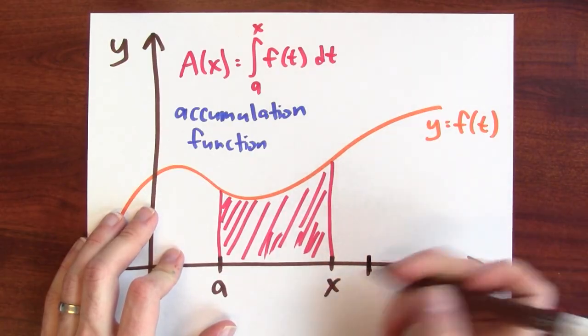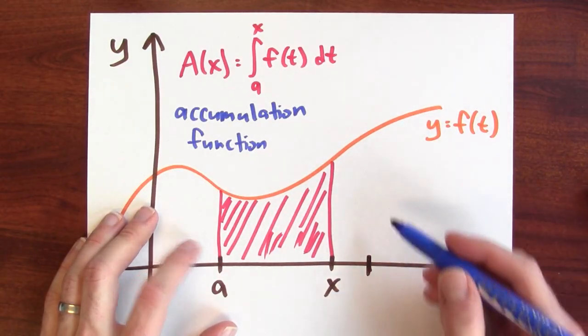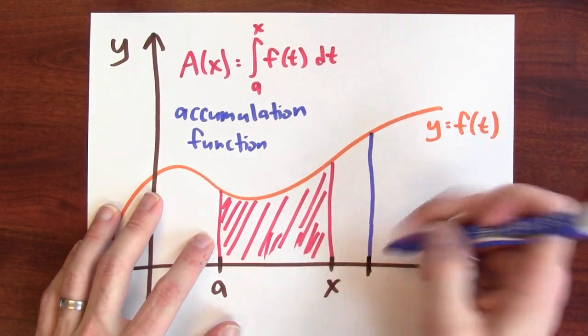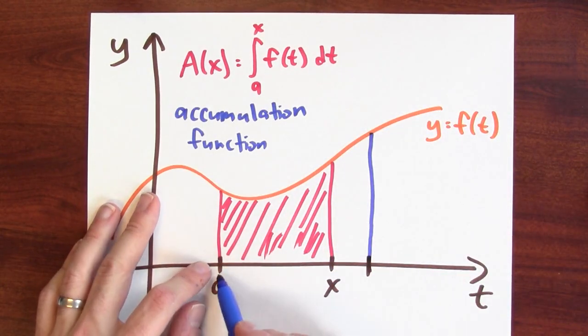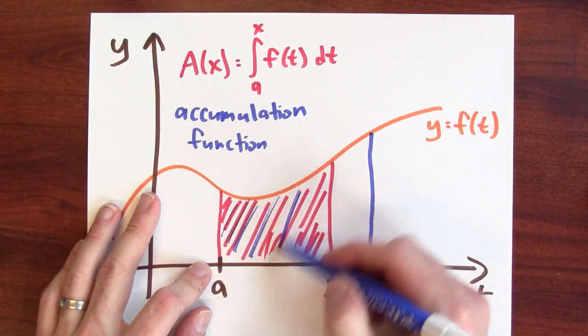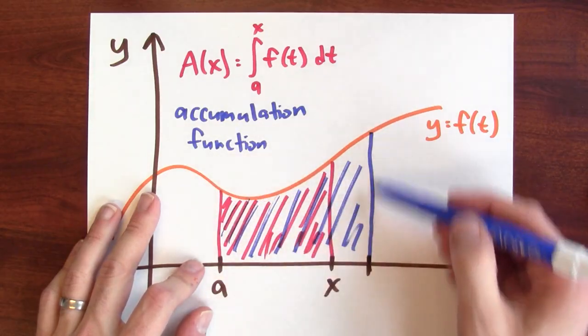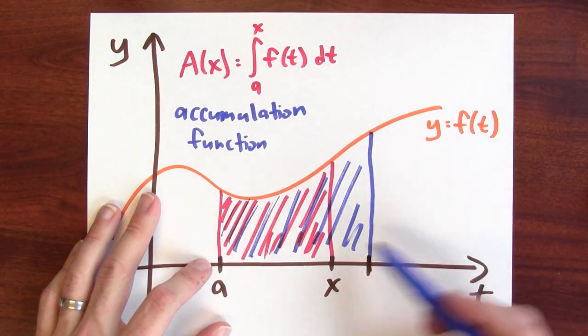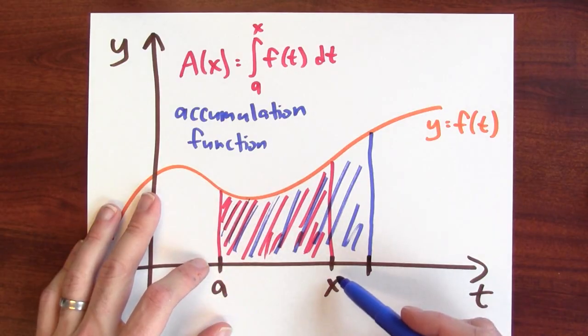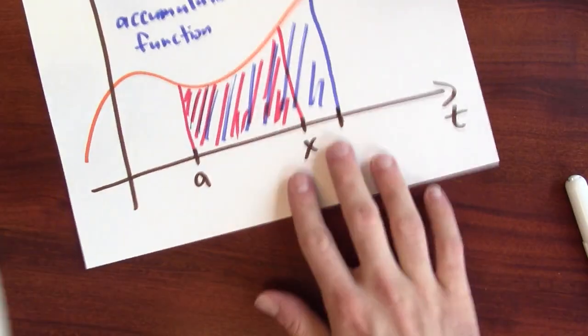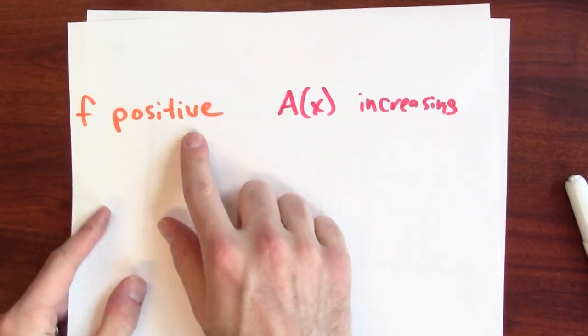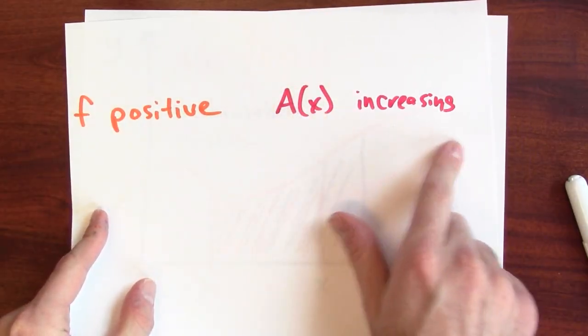So if I were to plug in some bigger input, the accumulation function just figures out how much area is between a and this bigger input. And as long as my function's positive, there's now more area between a and this bigger input than there was between a and x. So I can summarize this as saying that f is positive and that makes my accumulation function increasing.